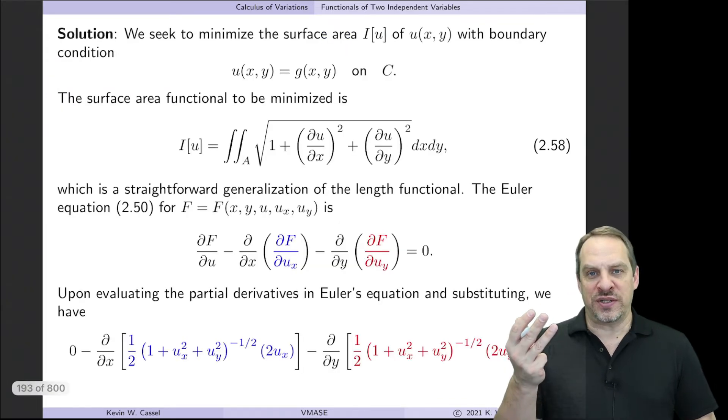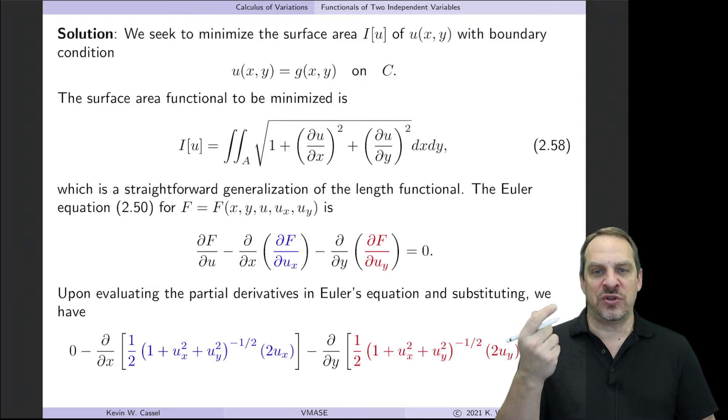So if you think of our three-step process, the first step is to get the functional, second step is to get the Euler equation from the functional, and then the third step is to solve the Euler equation.